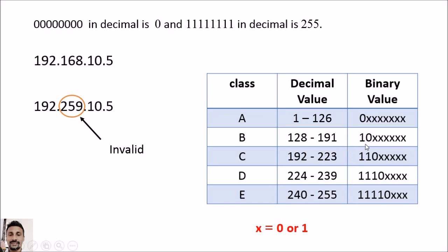For Class B, the binary value should start with 1 and 0, and the remaining six bits can be either one or zero. If the decimal value is between 192 and 223, it is Class C, where the binary value starts with 1, 1, 0. Class D ranges from 224 to 239, with a binary pattern starting with 1, 1, 1, 0, and the remaining bits can be either one or zero.